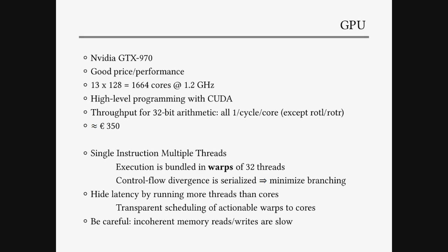On the GPU, you can actually run more threads than you have actual cores, because it has transparent scheduling of actionable warps to cores. So you can basically hide the latency of computations and memory access in this way. But you also have to be very careful about memory reads — they have to be very close to each other for every memory operation of threads in a warp, basically in the same bank, and then everything is very fast. If they're too far apart, then again, every memory access is serialized.